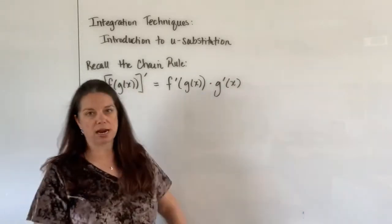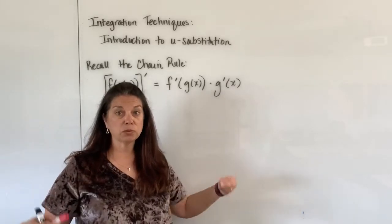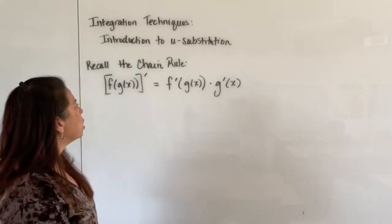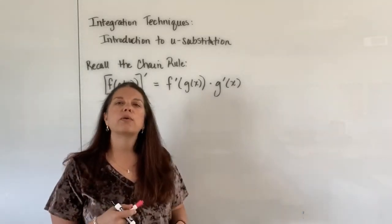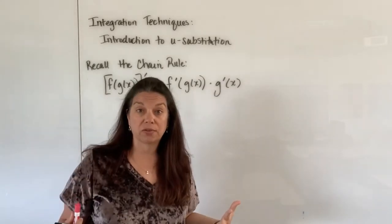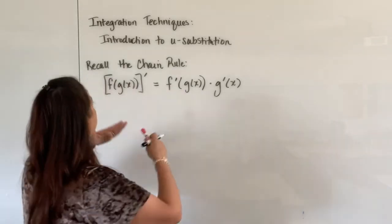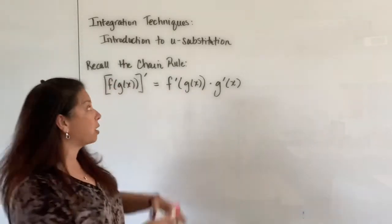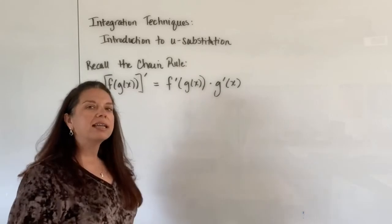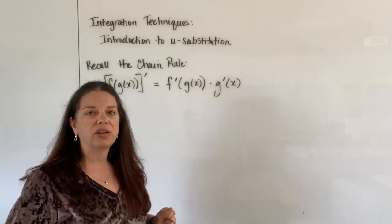Okay, so nothing new there in terms of the chain rule, but I need to draw your attention to that because u-substitution will allow us to undo that derivative work that we just did with the chain rule. And what we're going to do now is we're going to basically take this equation that I have up here, the chain rule, and let's find the anti-derivative of it.